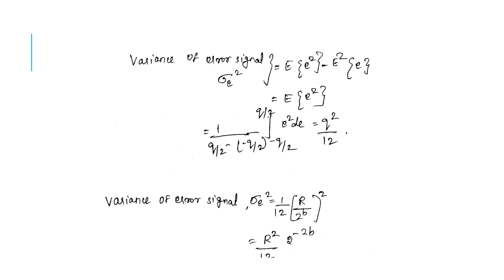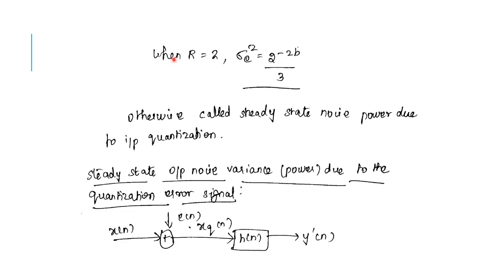The variance of the error signal is also called steady state noise power due to input quantization. The value of B would be infinite only if the A to D converter has infinite precision, which is not practically possible. Substituting R equal to 2 in the variance formula, we get 2 to the power of minus 2B divided by 3.